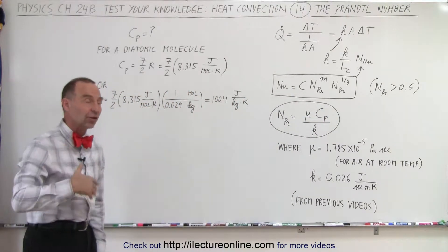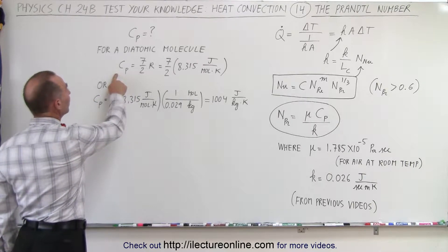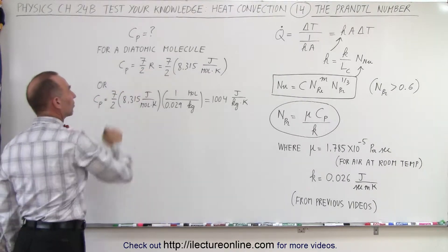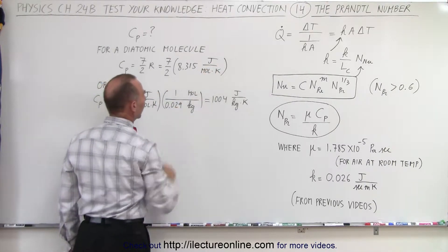And air is primarily made out of nitrogen and oxygen which is a diatomic molecule which means that Cp is 7 halves the gas constant. And the gas constant is 8.315 joules per mole times Kelvin.